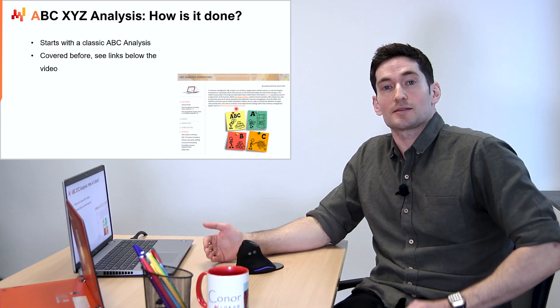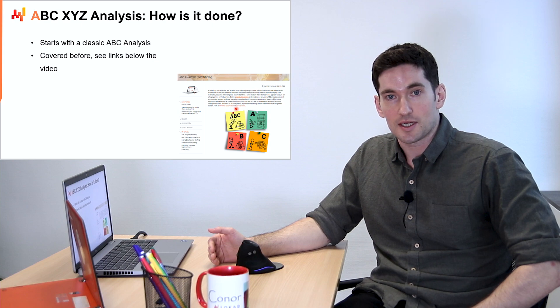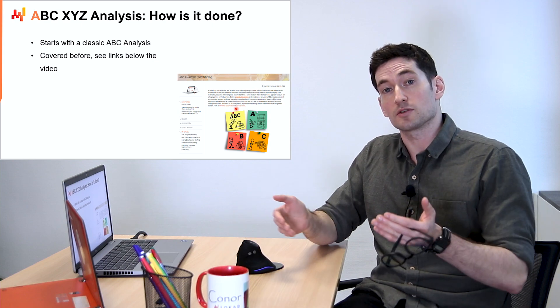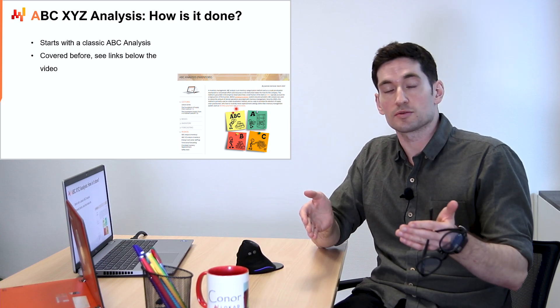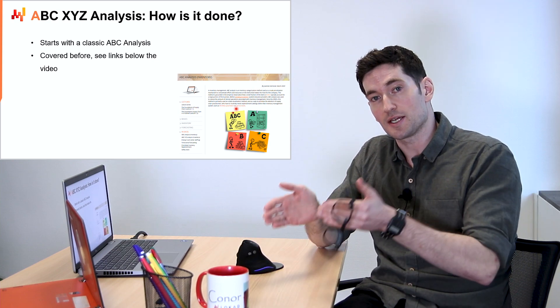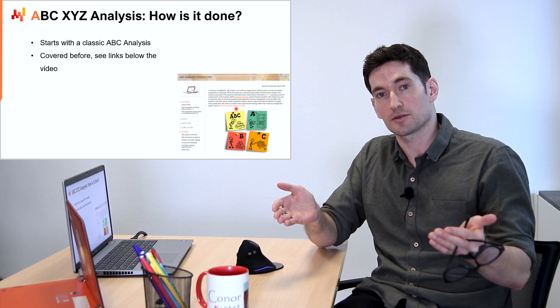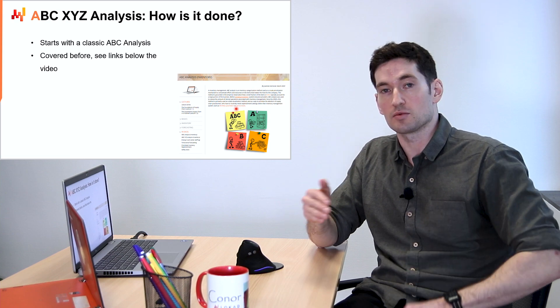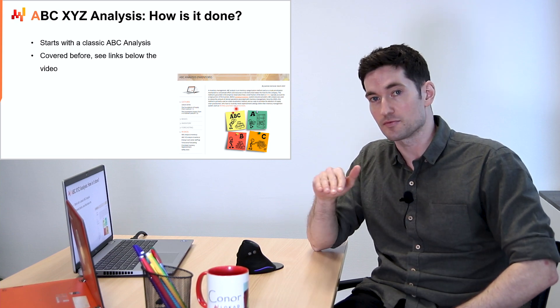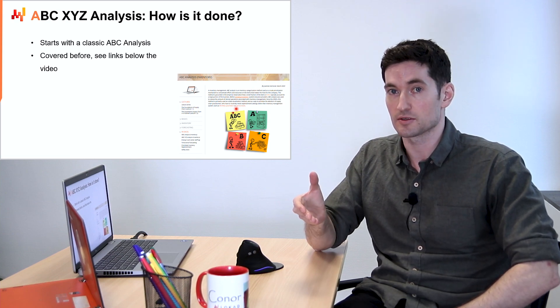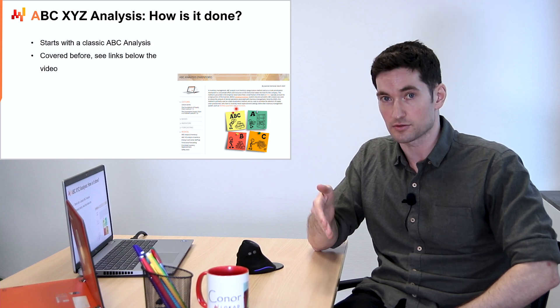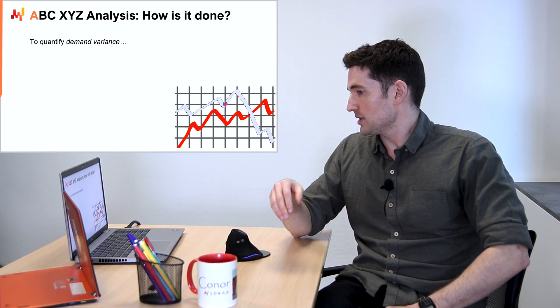We start with a classic ABC analysis. One takes one's data and sorts one's SKUs into respective ABC categories. We've covered this before multiple times in multiple formats, so feel free to review the links in the description below.